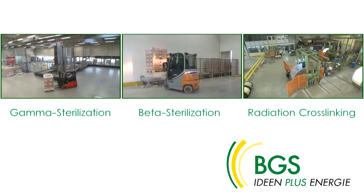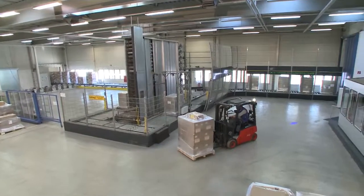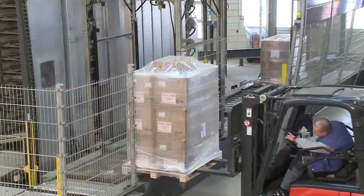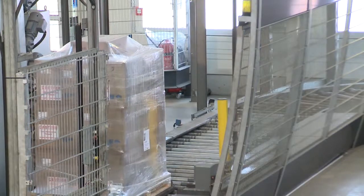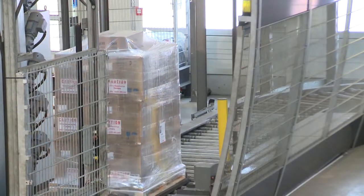In our gamma facilities, whole pallets or lots can be processed in large numbers fully automatically. The individual barcode of each and every order is detected by scanners at the entrance and exit.